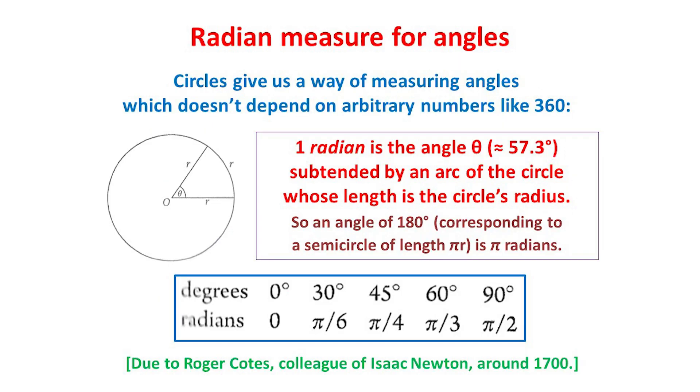Around 1700, a colleague of Isaac Newton's, called Roger Coates, showed how circles can be used to give us another way of measuring angles, which doesn't depend on arbitrary choices of numbers such as 360 degrees. Here, a radian is the angle theta subtended at the centre of a circle by an arc of the circle whose length is the circle's radius r. It is equal to about 57.3 degrees.